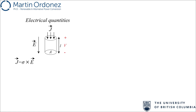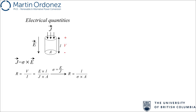We remember from physics that E and J are related to each other through the material conductivity. In any medium, we can find the current density by multiplying the conductivity by the electric field. From Ohm's law, the resistance of a conductor is found by dividing the voltage drop by the current passing through it. For a cylinder with length L and surface area A, knowing that V equals E times L and I equals J times A, and that E divided by J equals conductivity, we find the well-known equation for electrical resistance.